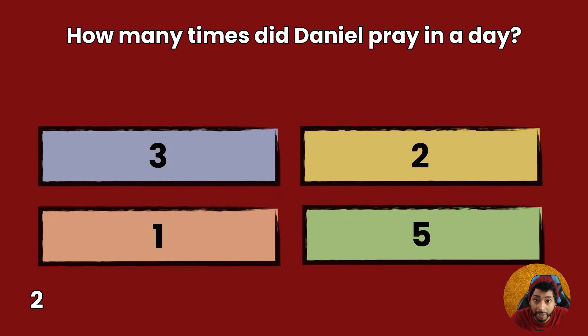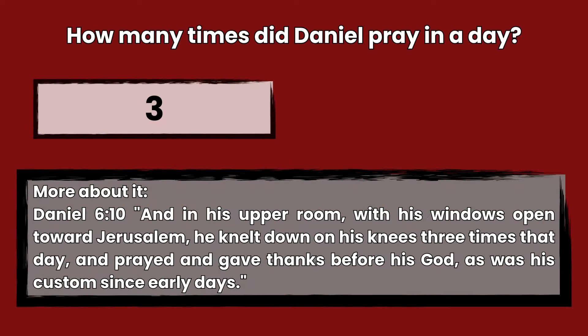Question 2: How many times did Daniel pray in a day? 3, 2, 1, or 5? Answer: 3. Daniel 6:10 — And in his upper room, with his windows open toward Jerusalem, he knelt down on his knees three times that day and prayed and gave thanks before his God, as was his custom since early days.